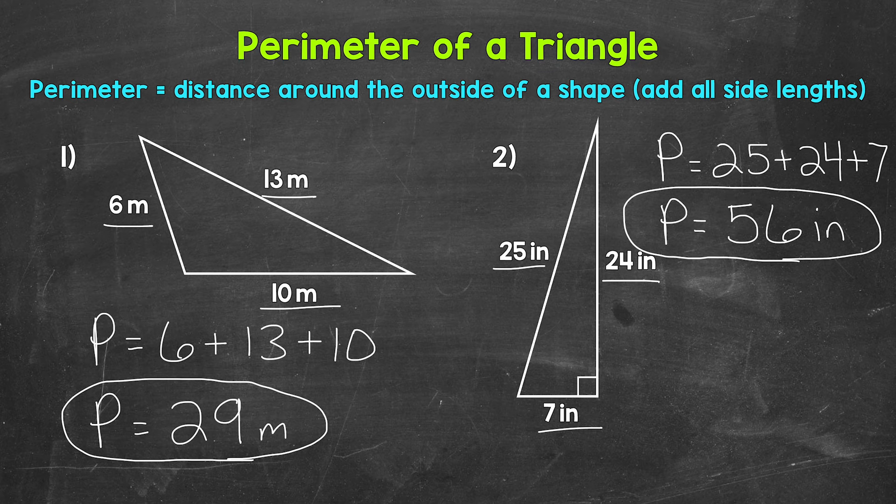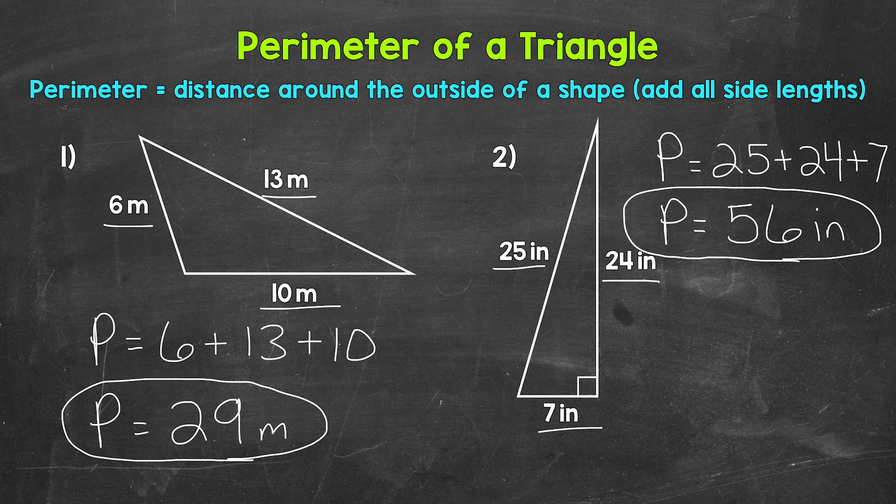So there you have it. There's how to find the perimeter of a triangle. Just remember, the perimeter is the distance around the outside of a shape. And we can add all of the lengths of the sides in order to find the perimeter. I hope that helped.